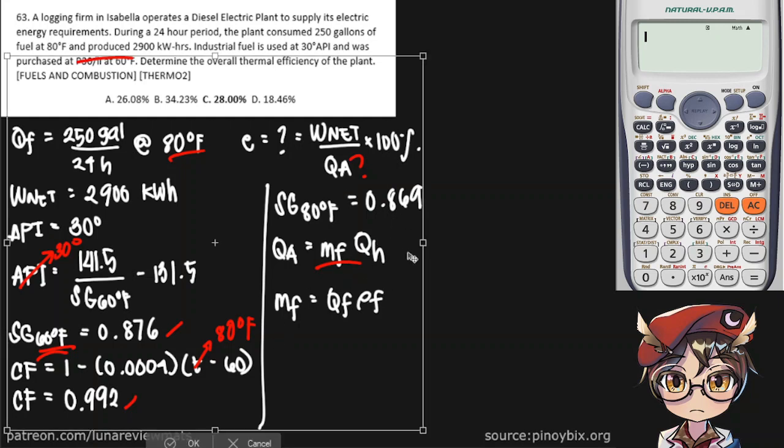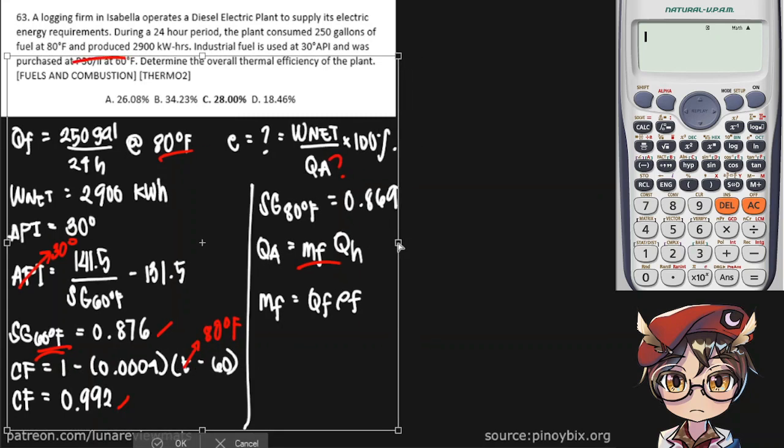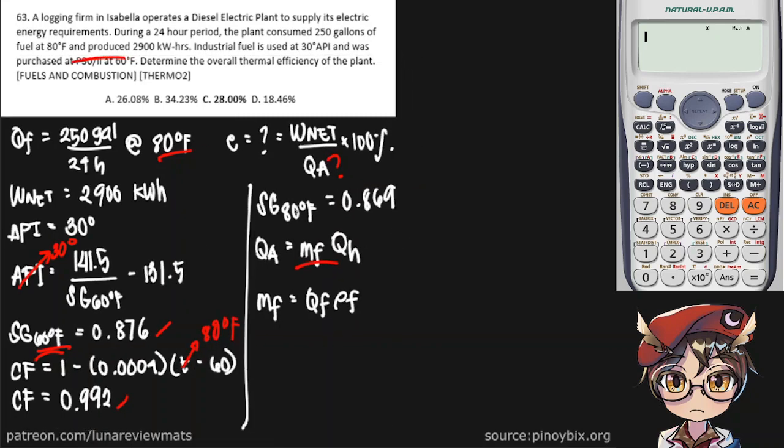So we can simply put our values in here. I'm going to need more space. First, we have to convert our 250 gallons of fuel for 24 hours into cubic meters per second. So therefore, 1 hour is equal to 3,600 seconds.